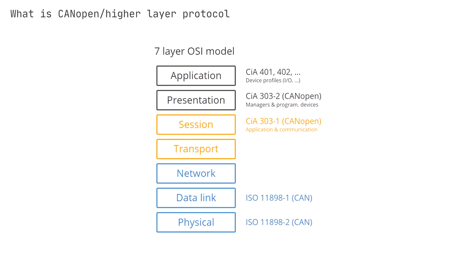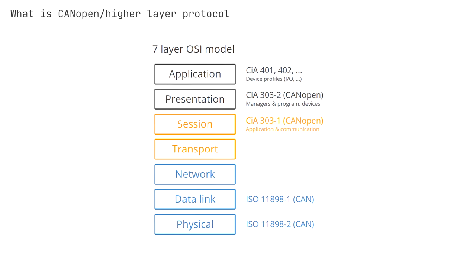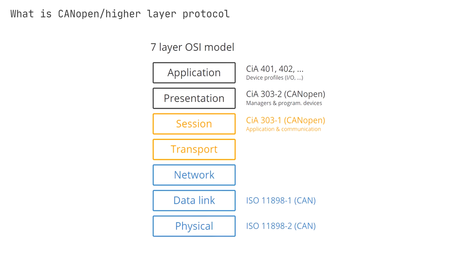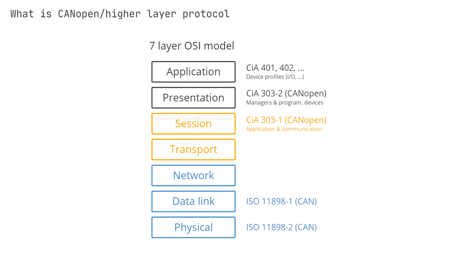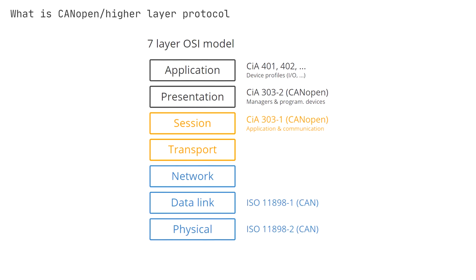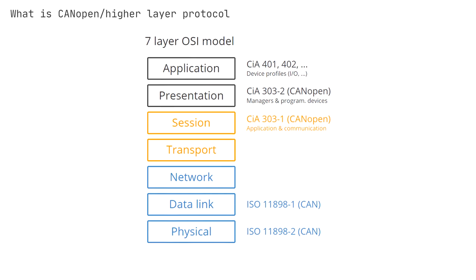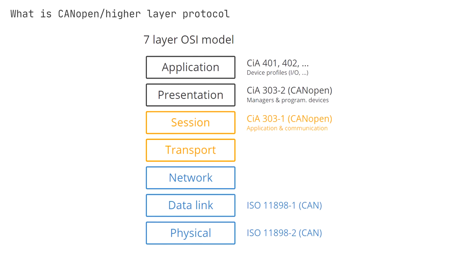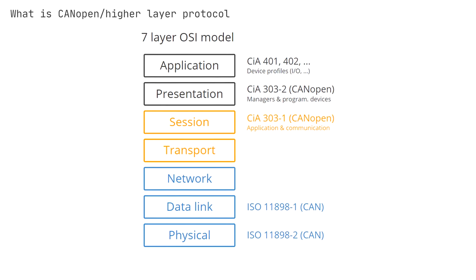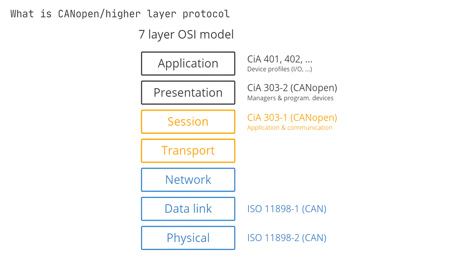CANopen is a higher-layer protocol based on CANbus. This means that CANbus (ISO 11898) serves as the transport vehicle for CANopen messages, like a truck for containers. You can view CANopen from a seven-layer OSI model. Here, the CANbus represents the two lowest layers — number one, physical, and number two, data link. CAN simply enables the transmission of frames with an 11-bit CAN ID, a remote transmission bit (RTR), and 64 data bits. In this way, CANbus plays the same role in CANopen as it does in, for example, the J1939 protocol.